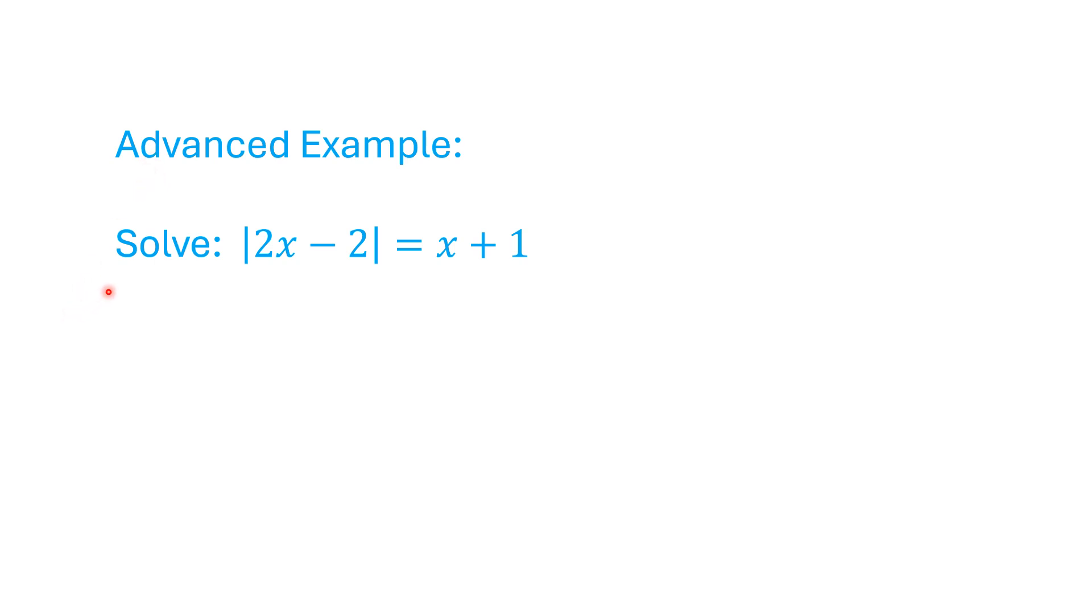So now we'll look at a more advanced problem. |2x - 2| = x + 1. We have a variable outside of the absolute value bars. This is going to create its own problems.